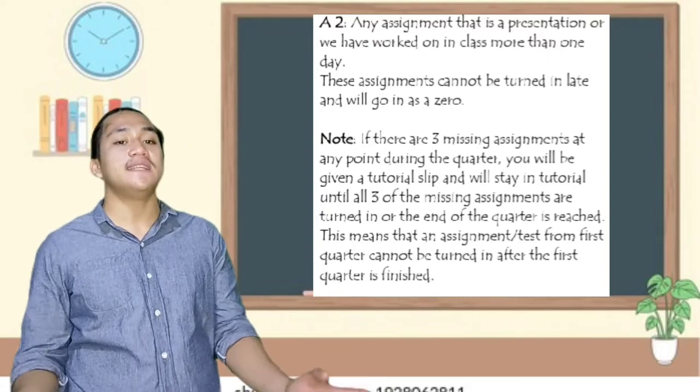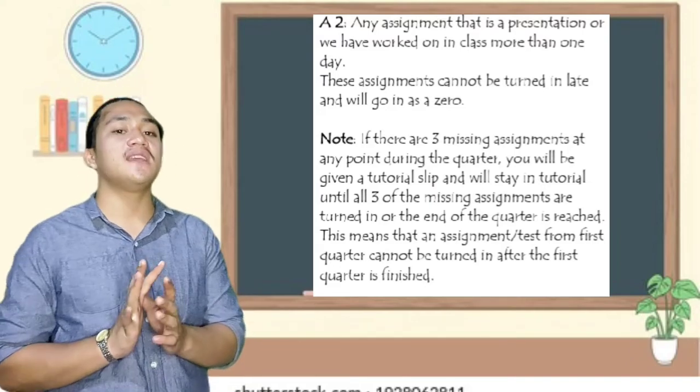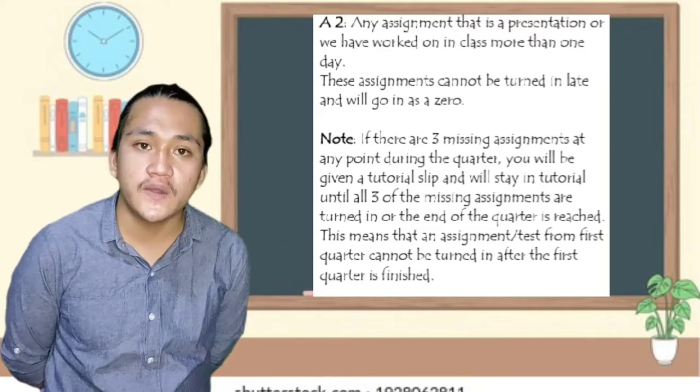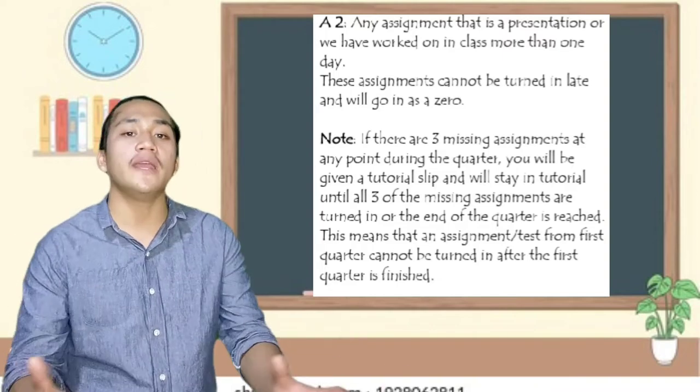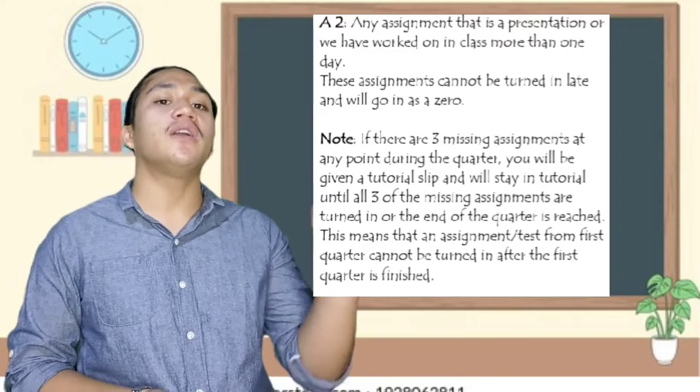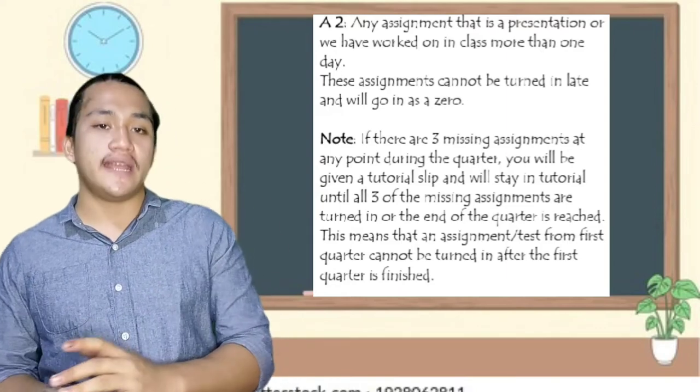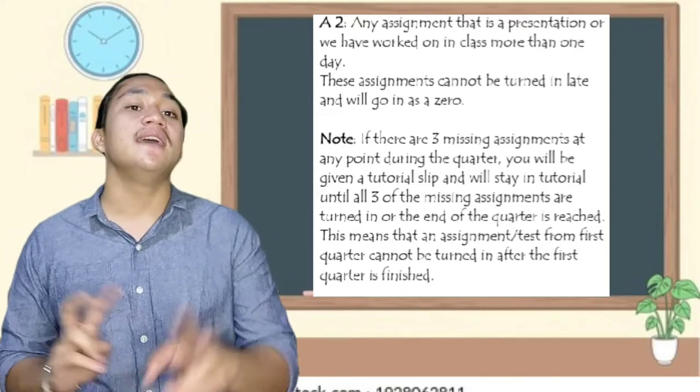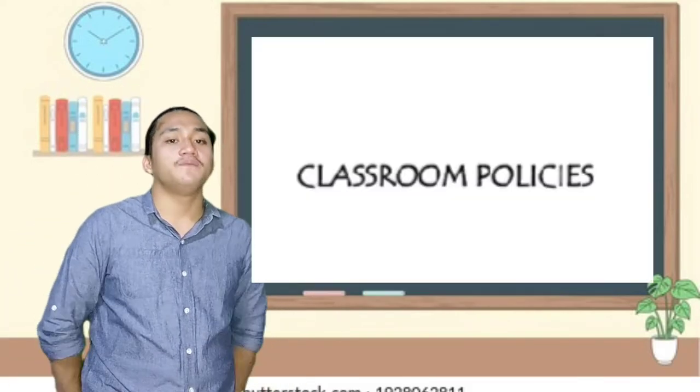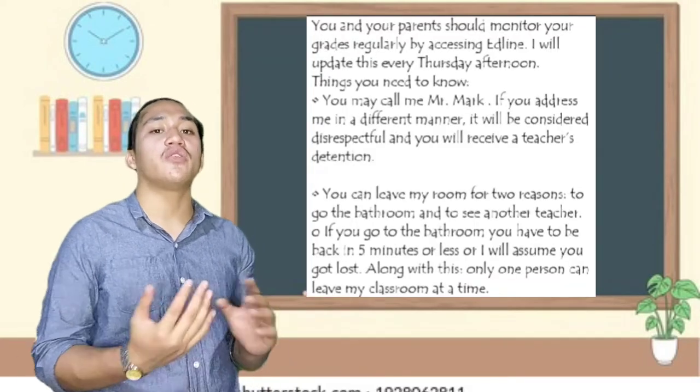Next is assignment two: any assignment that is a presentation or we have worked in class more than one day. This assignment cannot be turned in late and will go in as zero. Note if there are three missing assignments at any point during the quarter, you will be given a tutorial slip and will stay in tutorial until three of the missing assignments are turned in or the end of the quarter is reached. This means that an assignment test from first quarter cannot be turned in after the first quarter is finished.